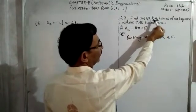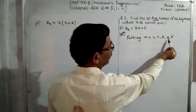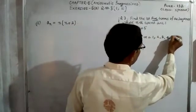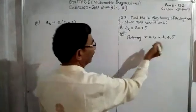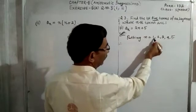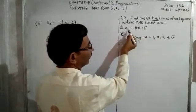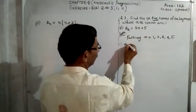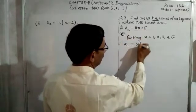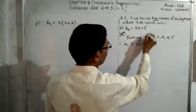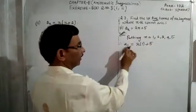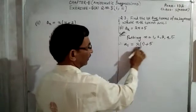If it is only the first 4 terms, we go up to 4 only. If it is 6 terms, we have to put here up to 6. So putting n = 1, 2, 3, 4, 5, now see what will happen. If I put n equal to 1, here aₙ will change into a₁.